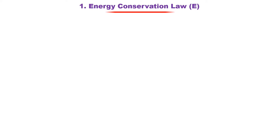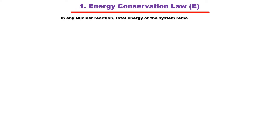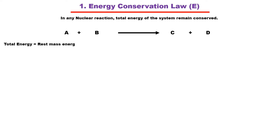According to energy conservation, the total energy of the system should be conserved in any nuclear reaction. Since the velocity of subatomic particles is extremely high, mass and energy are considered equivalent. If two parent particles A and B interact and decay into two daughter particles, the total energy of the parent particles should equal the total energy of the daughter particles. Total energy here means rest mass energy plus kinetic energy.